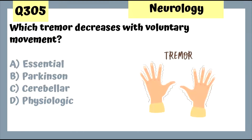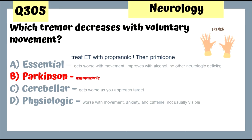Question 305: Which tremor decreases with voluntary movement? Parkinson's tremor decreases with voluntary movement. Essential tremor gets worse with voluntary movement. Cerebellar tremor gets worse as you approach the target. Physiologic tremor is barely noticeable and is associated with caffeine and anxiety.